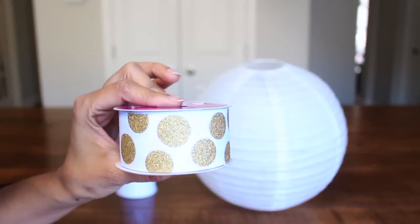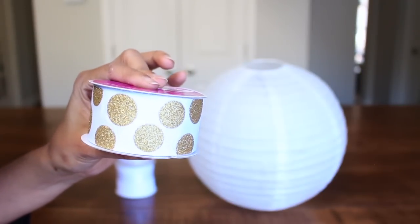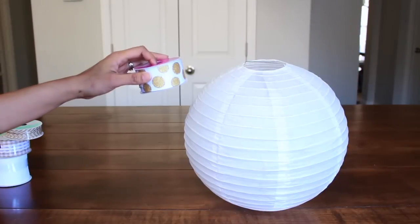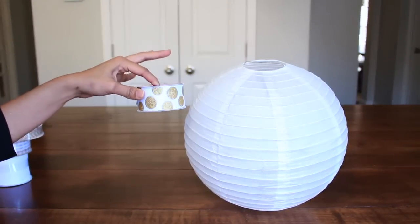I'm going to be using the white ribbon with gold glitter polka dots. Look how pretty that is. I love polka dots. I'm going to make a few stripes around the lantern, about four.